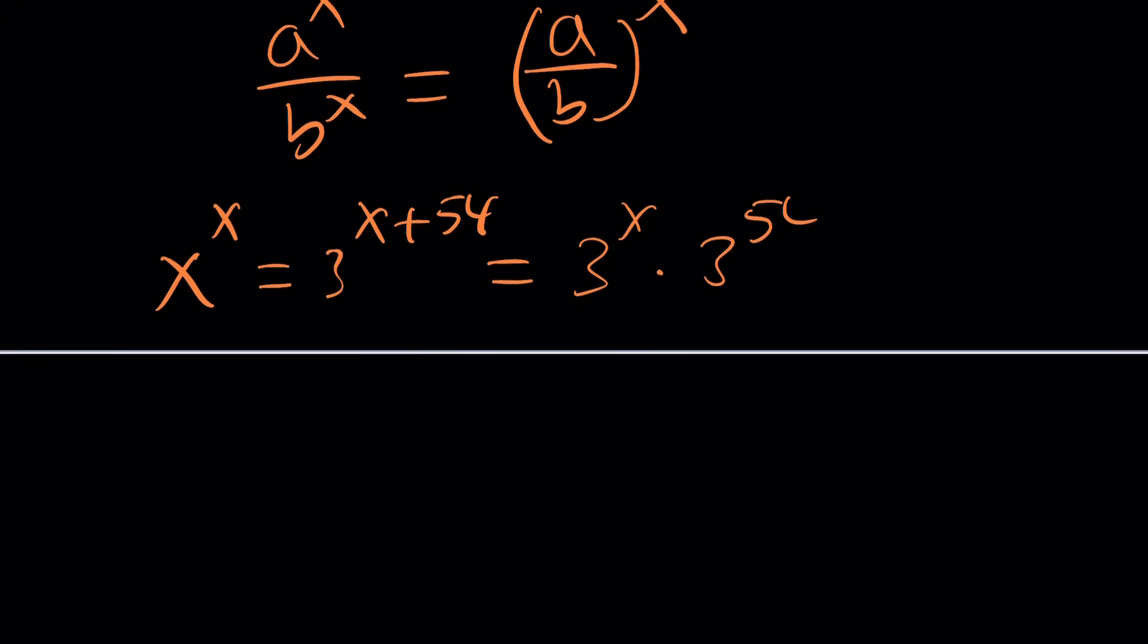So now 3 to the power of x plus 54 can be written as 3 to the x times 3 to the power of 54. By the way, 3 to the power of 54, don't try to evaluate it. I mean, you can use Desmos, obviously, or Wolfram Alpha. It's a very large number.